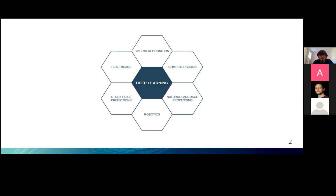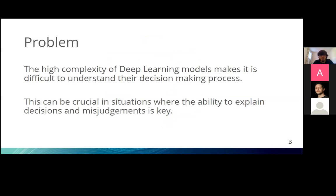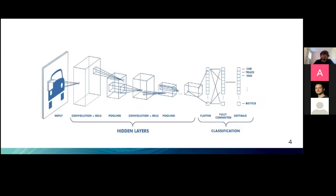Despite the success of deep learning methods in all those fields, there is a problem: the lack of interpretability and transparency in the decision-making process. The high complexity of deep learning models makes it very difficult to understand how the model is reaching its final decision. In some domains like medical and law enforcement, it's not sufficient to know only the final prediction — it's important to know the whole decision-making process in a transparent manner.